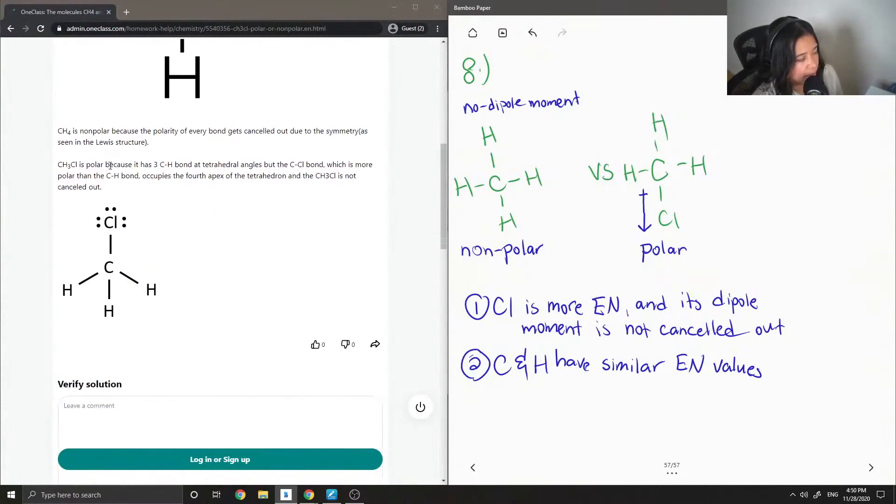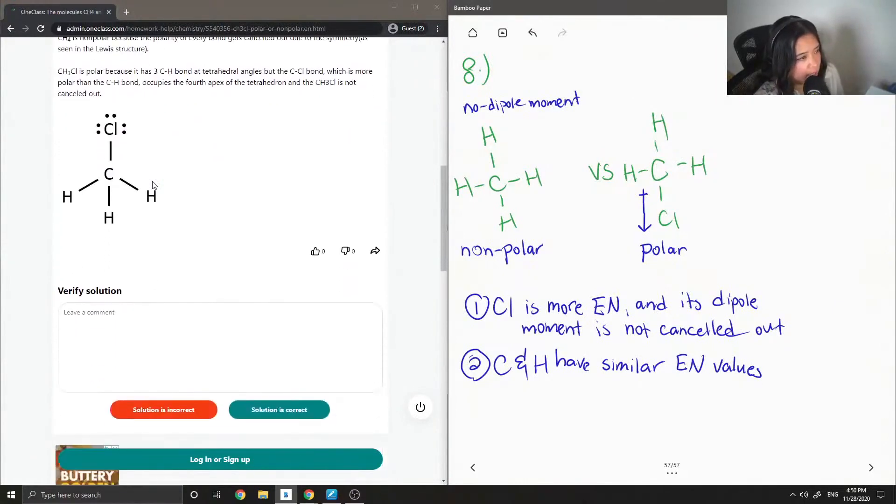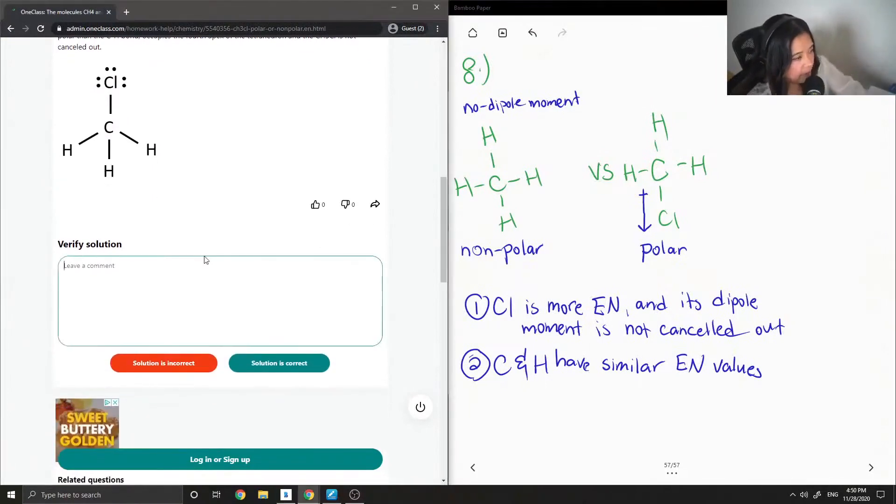CH3Cl is polar because it has three carbon-hydrogen bonds at tetrahedral angles, but the carbon-chlorine bond, which is more polar, occupies the fourth apex of the tetrahedron and it is not cancelled out. The solution is correct. Great explanation.